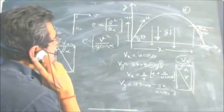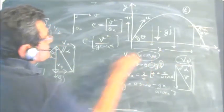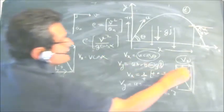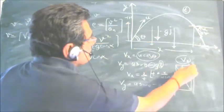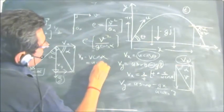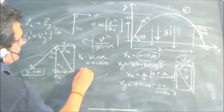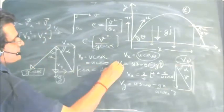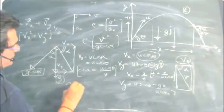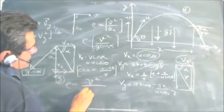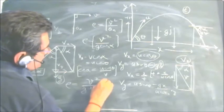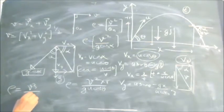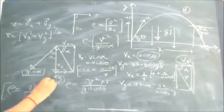We know that vx equals u·cosθ and vx also equals v·cosα. From here, v·cosα equals u·cosθ, so cosα equals u·cosθ upon v. Placing the value of cosα into ρ equals v²/(g·cosα), we get ρ equals v² upon g·(u·cosθ/v), which gives ρ equals v³ upon g·u·cosθ. This is an important relationship. By this method, you can find the radius of curvature at any point.